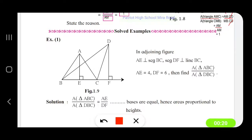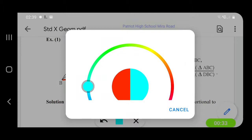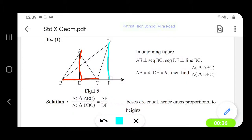AE is perpendicular to BC and DF, DF is perpendicular to BC again and AE is equal to 4.